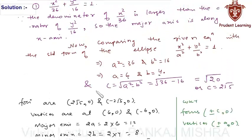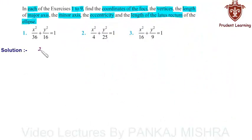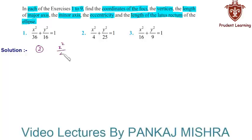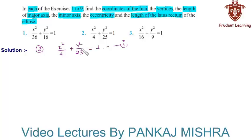In the second question, the given equation of the ellipse is x² / 4 + y² / 25 = 1. Since the denominator of y² / 25 is greater than the denominator of x² / 4, the major axis of this ellipse will be along the y-axis.